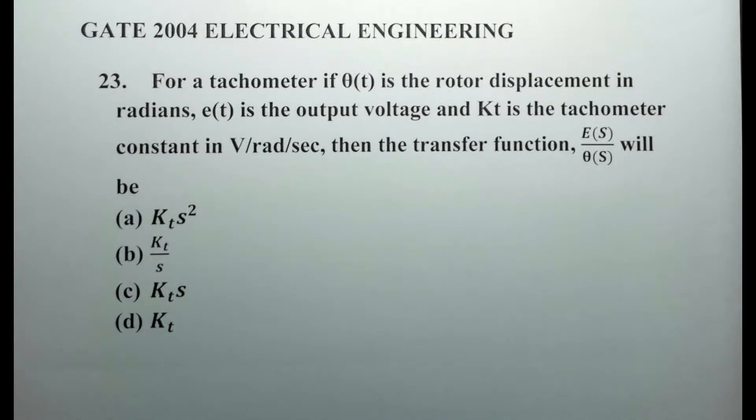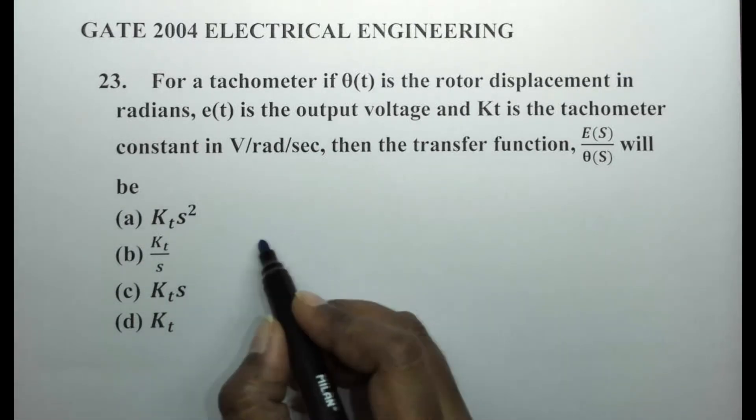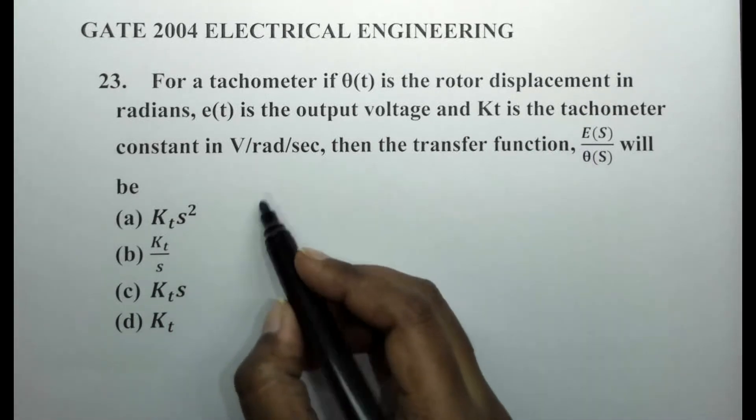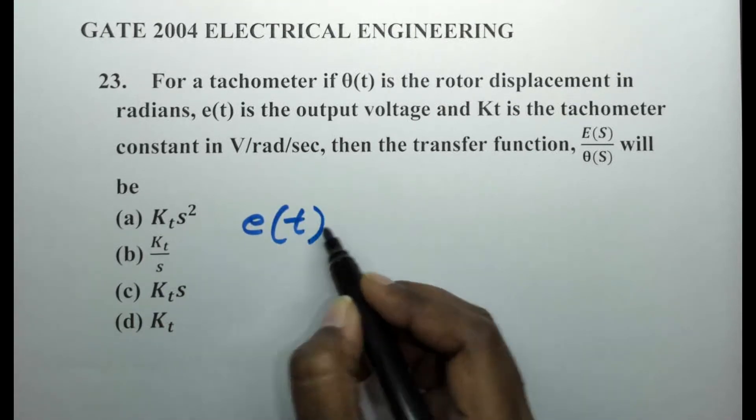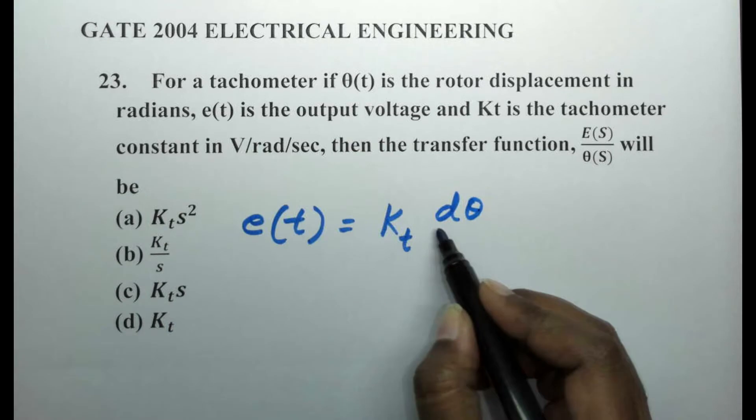Now for a tachometer, the first thing we will have to do is write down the voltage equation. The voltage equation - we have been given that the output voltage is e of t. So e of t is given as the tachometer constant kt into d theta by dt.